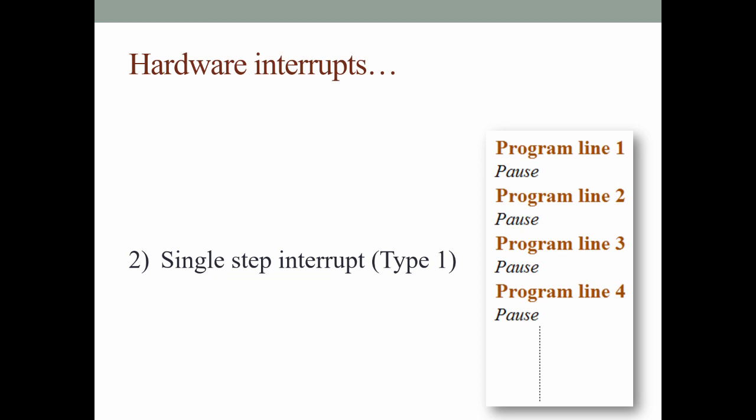That means the programmer can check the result of every program line, and once the programmer gives the direction to execute the further program line, then it will execute the second program line, again it will take a pause, and so on. This is particularly used for debugging the assembly language program.